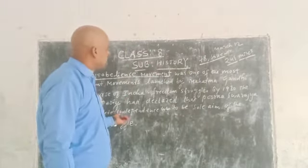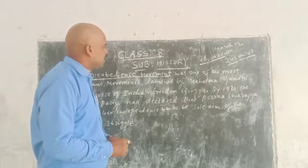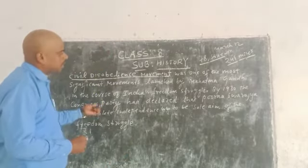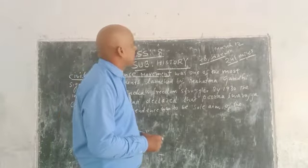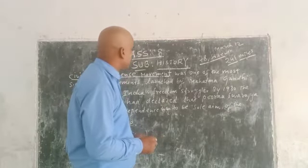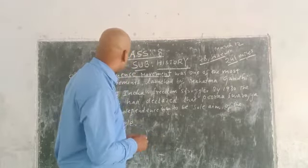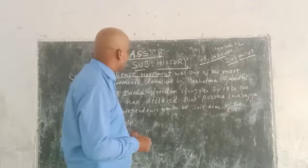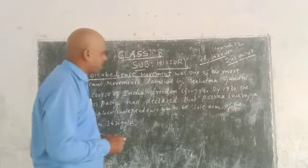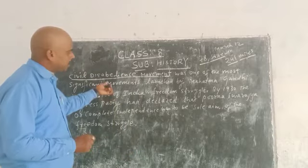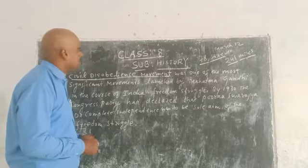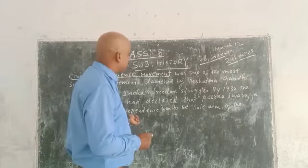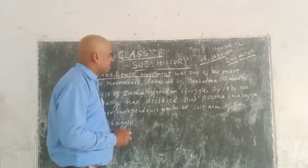The movement was successful, and most of the Indians — including important leaders — followed it. Many people followed from Sabarmati Ashram to the Arabian Sea. That's why this Civil Disobedience Movement is very important in the history of the world as well as the history of India. Its main aim was to achieve complete independence.